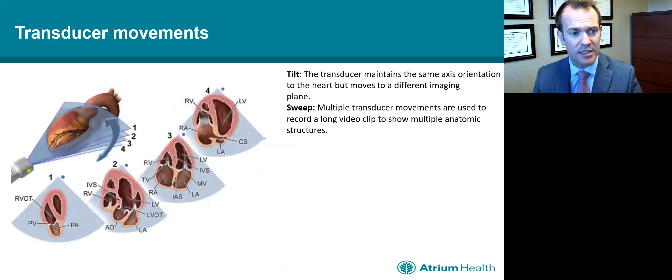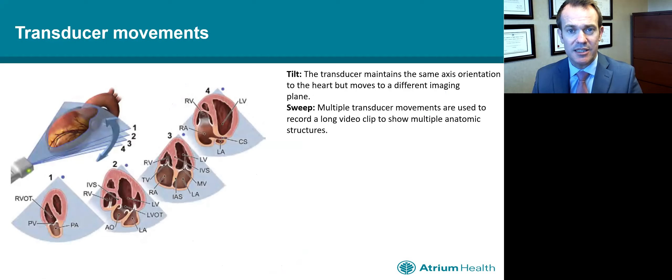I'm going to begin by talking about some transducer movements. The first is tilting the probe, where the probe maintains the same axis and we move the bottom of the probe up or down to cut different imaging planes of the heart. As you tilt the probe anteriorly or posteriorly, you can go from the RV to a five-chamber, four-chamber, and then get back into the view where we see the CS.